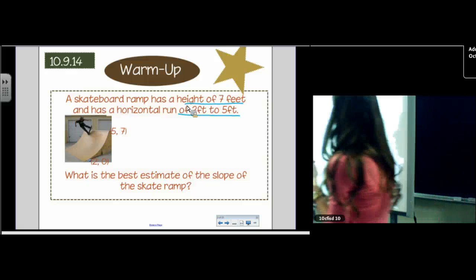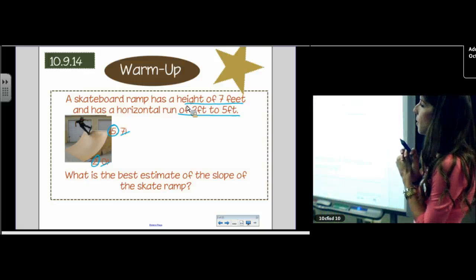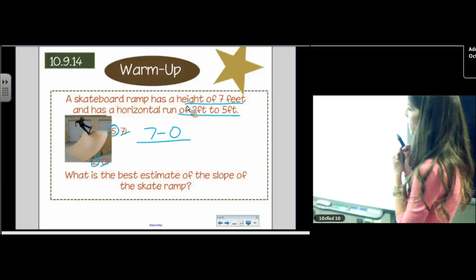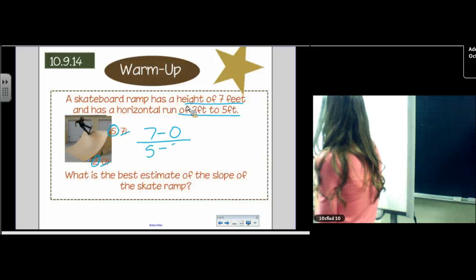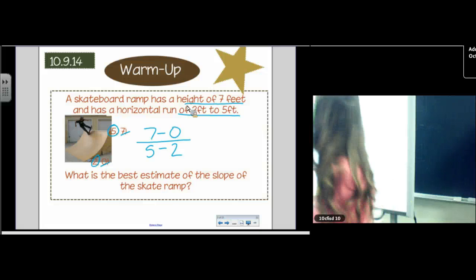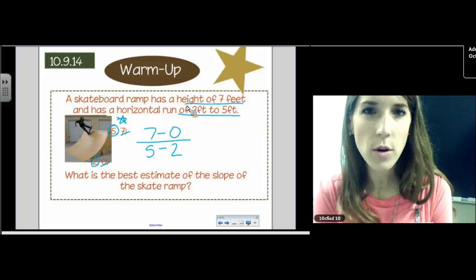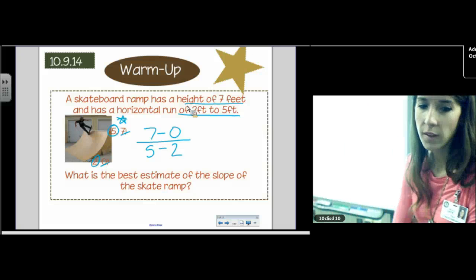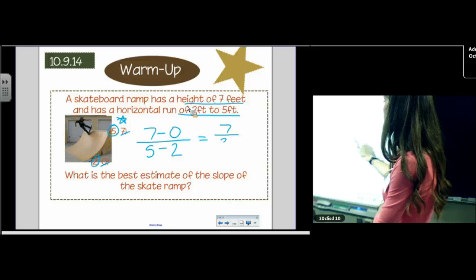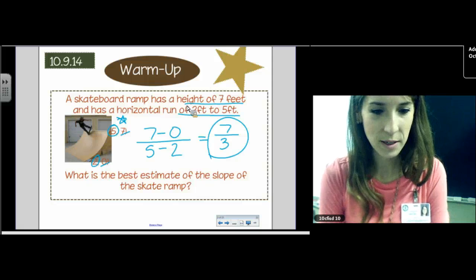So I still recommend that you circle your X's and underline your Y's. To find the slope, we would do underline minus underline over circle minus circle, the change in Y over the change in X. Whichever coordinate you start with, if you start with the seven, then you have to also start with the five. So our numerator would be seven. Our denominator would be three. And that would actually be the slope of the skate ramp, seven thirds.